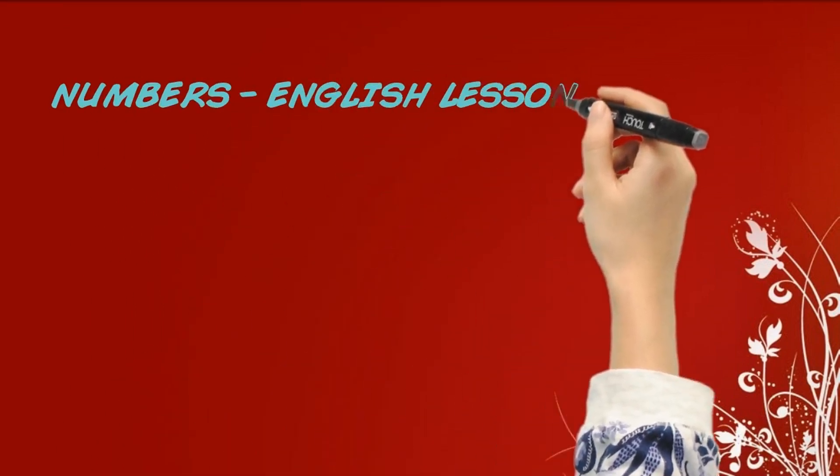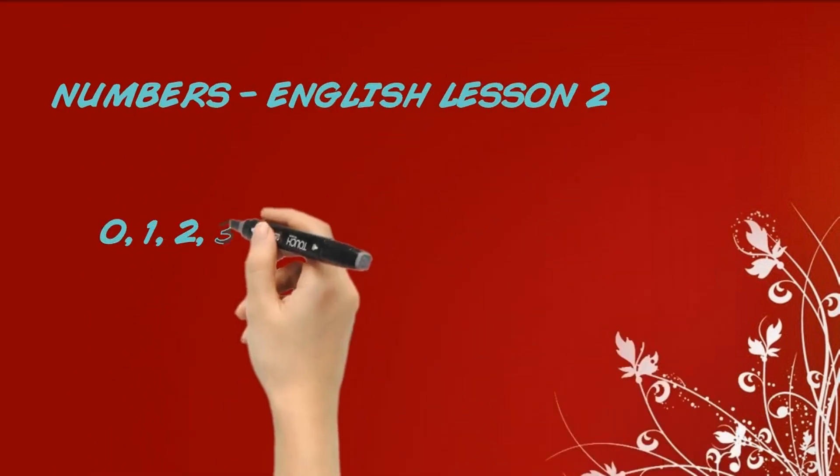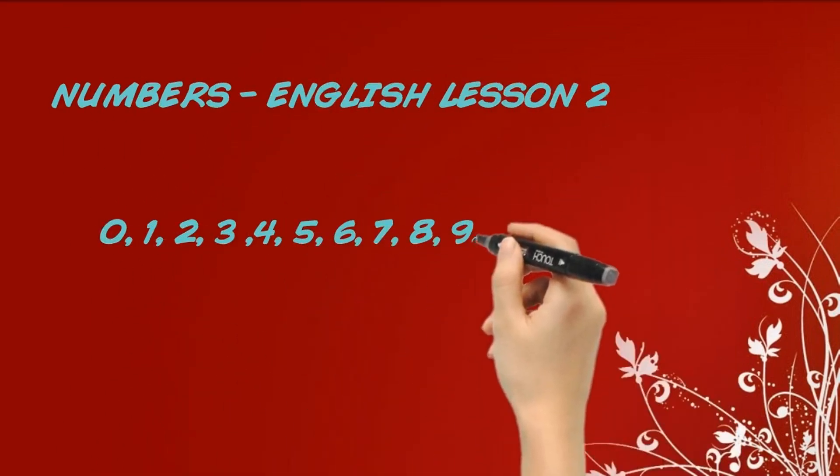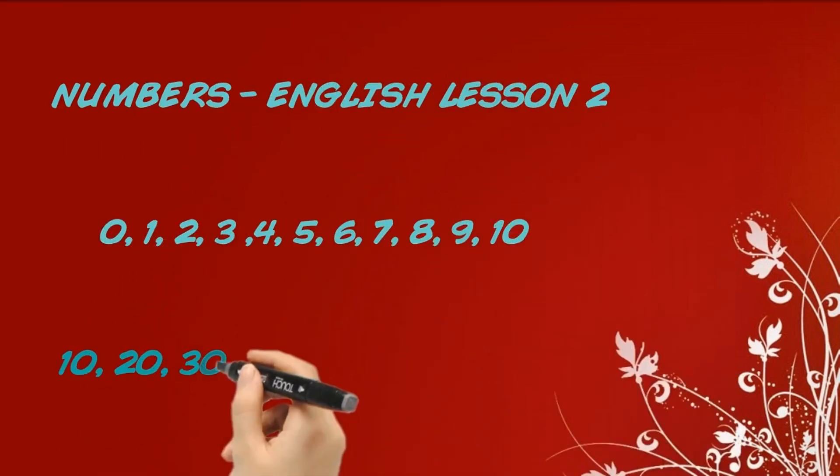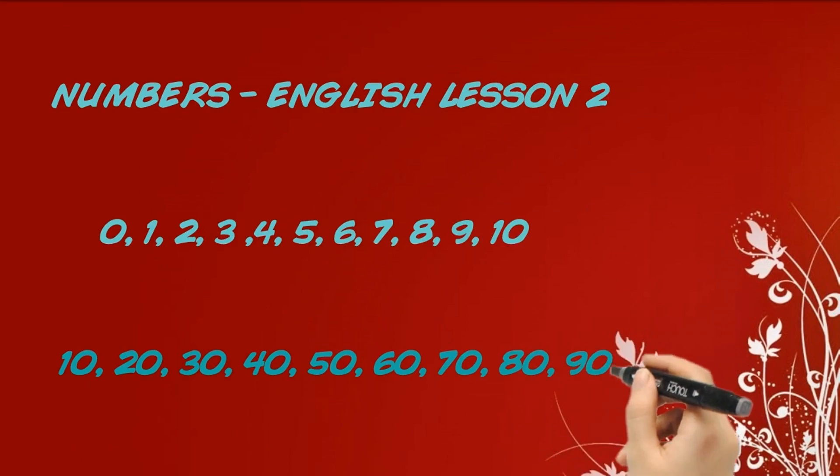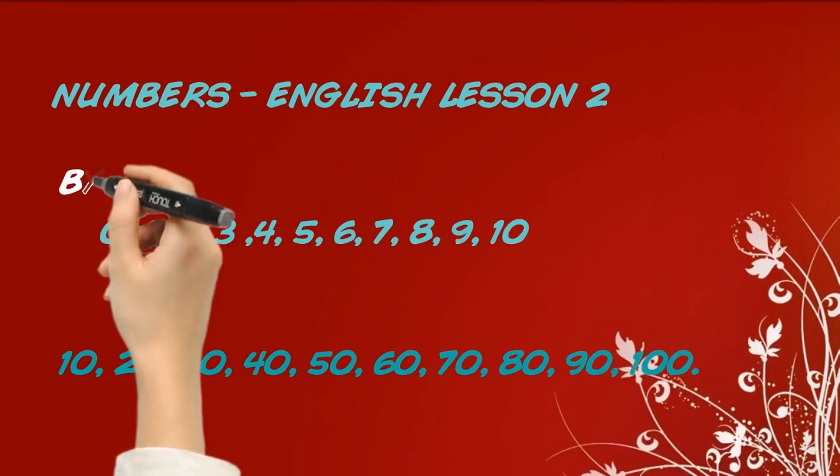English numbers to ten: zero, one, two, three, four, five, six, seven, eight, nine, ten.